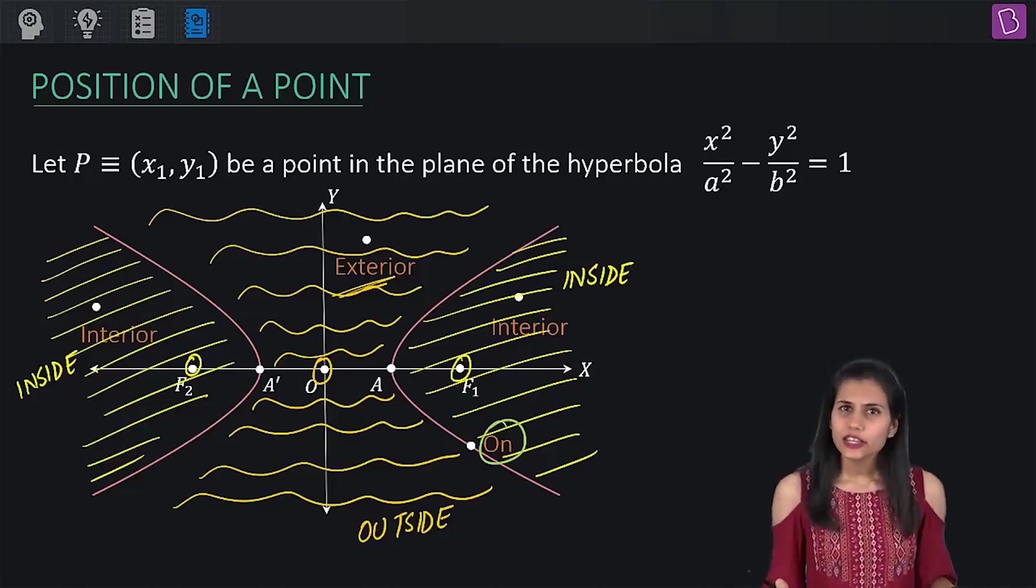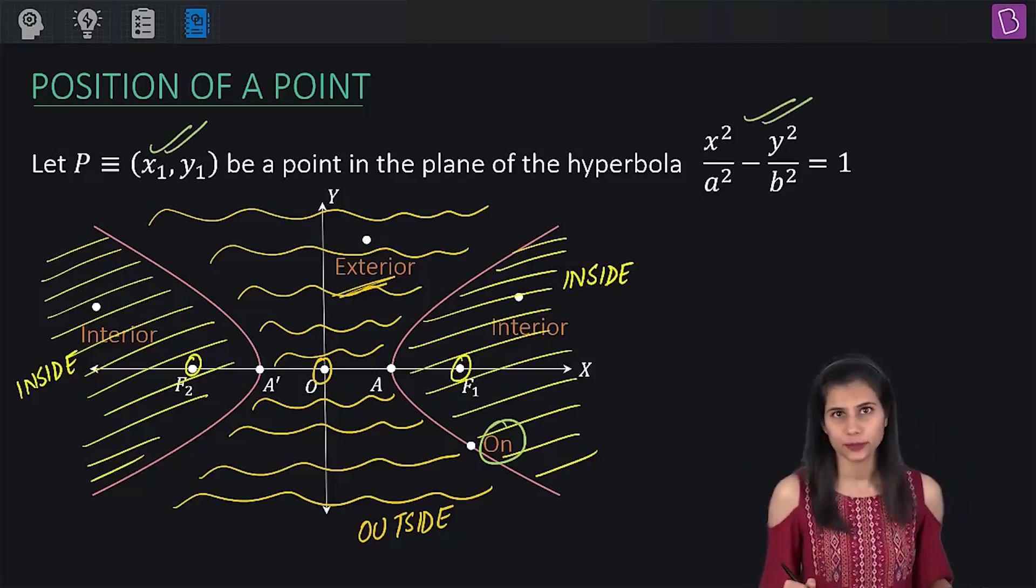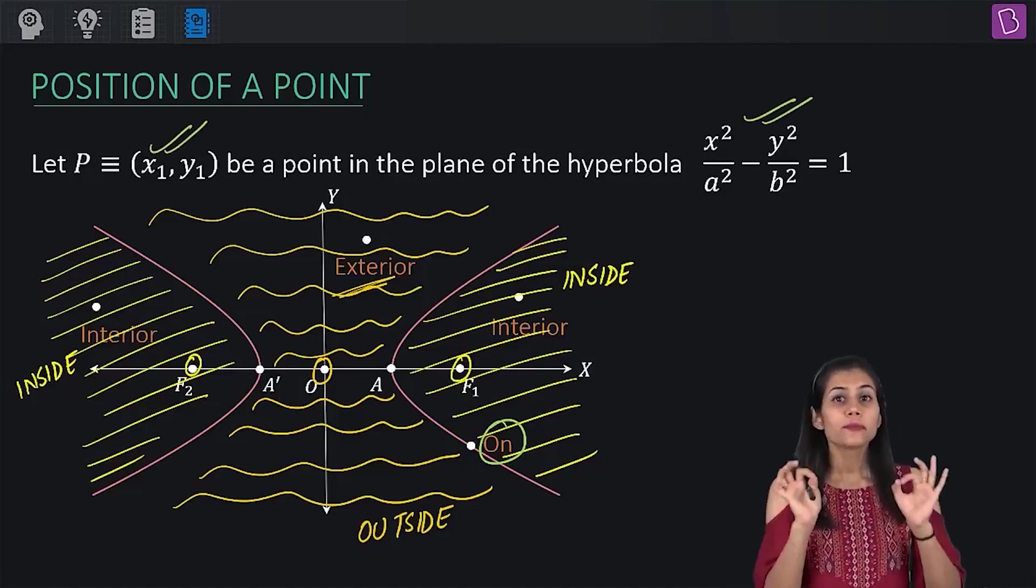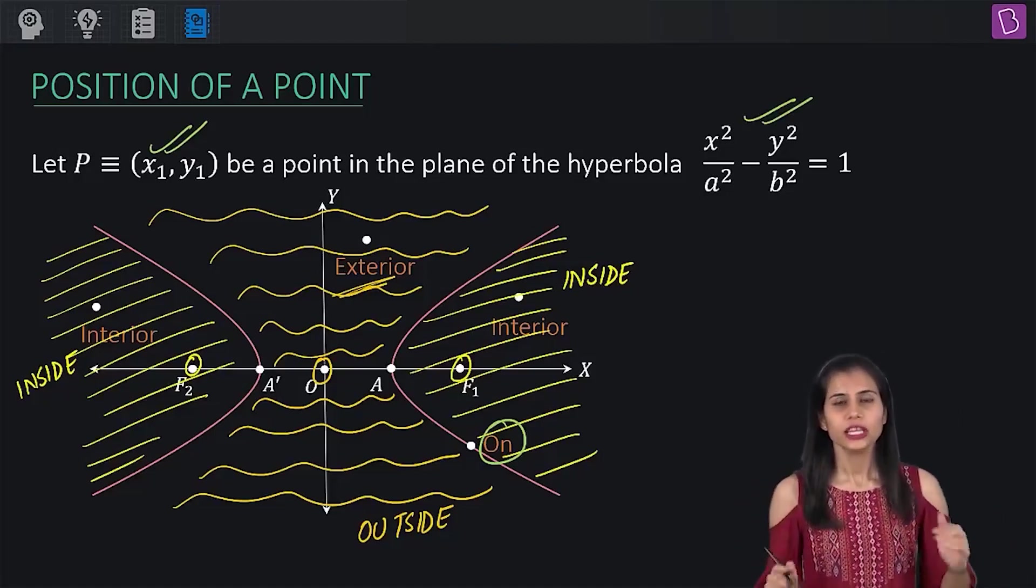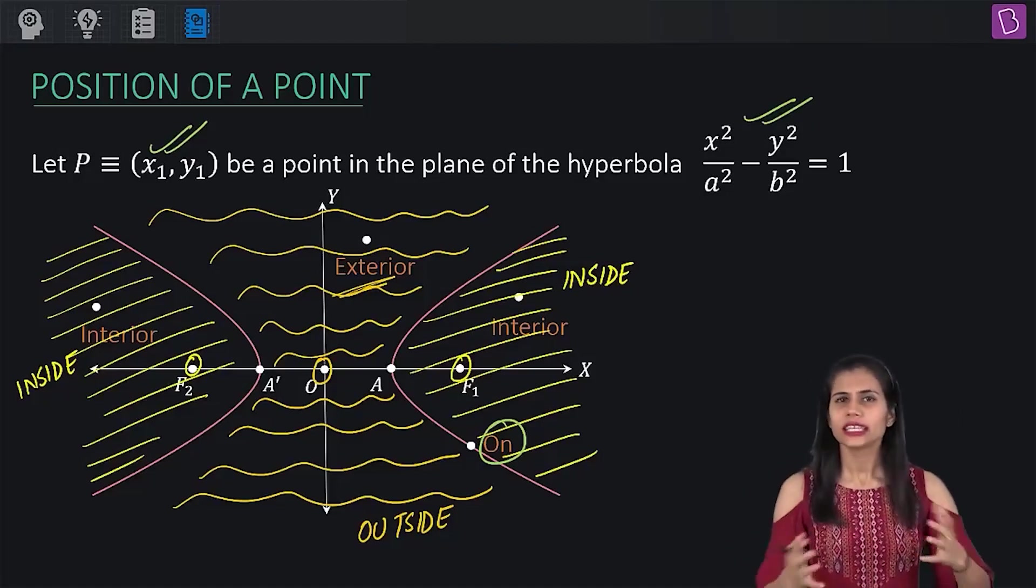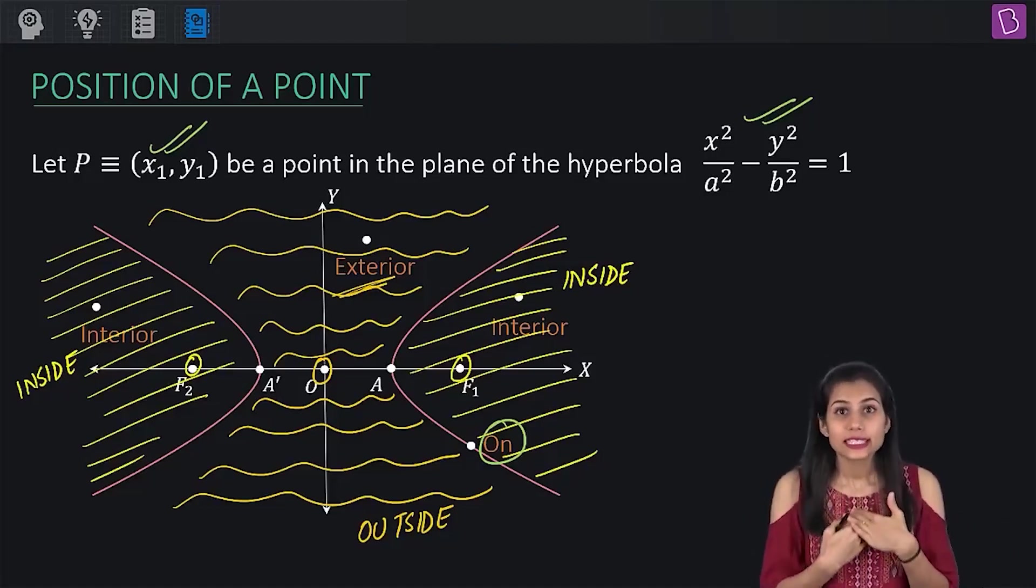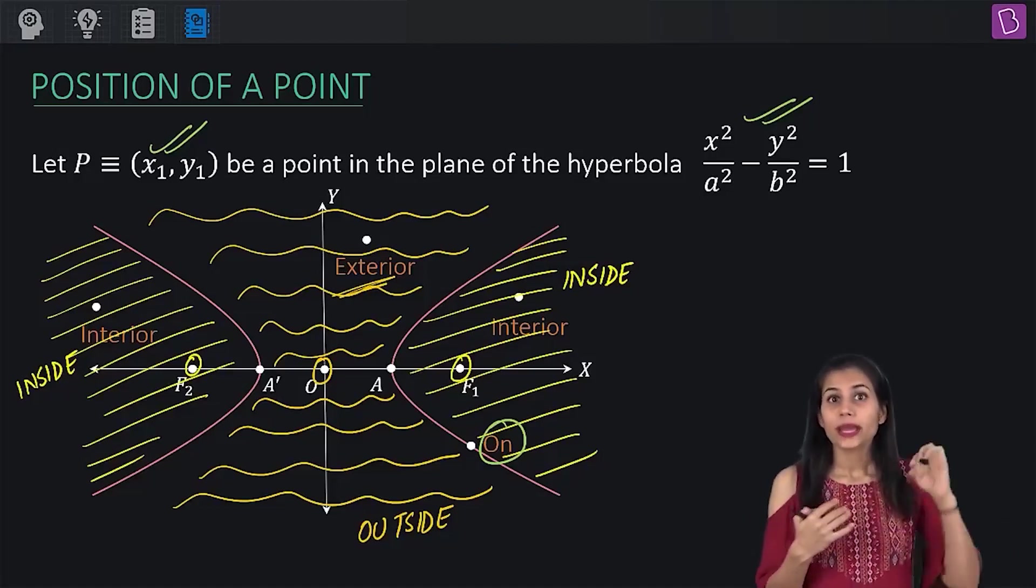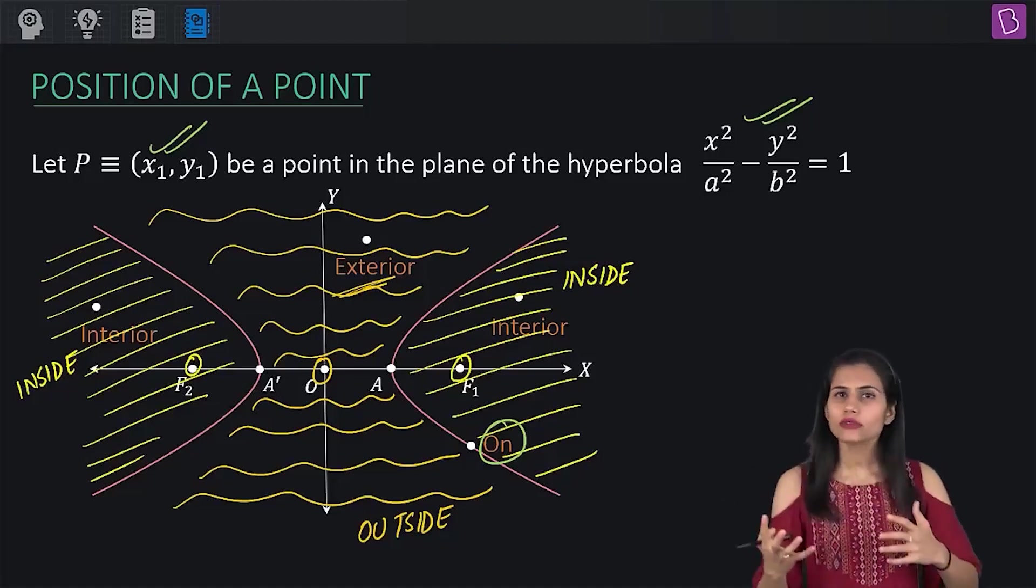Now, if I give you the coordinates of a point and the equation of a hyperbola, how will you determine the position of this point with respect to the given hyperbola? That's the ultimate question. Basically what I'm trying to ask you is, give me that condition based upon which I can decide and hence conclude that my given point is lying inside the hyperbola or on it or outside it.